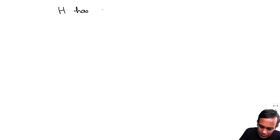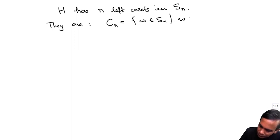So H has N left cosets in SN. They are given by CI is equal to W in SN such that W of N is equal to I, for I going from 1 to N.